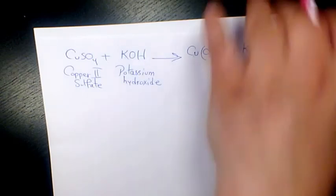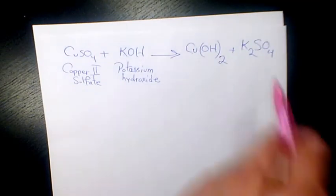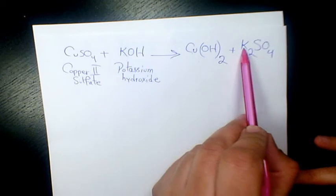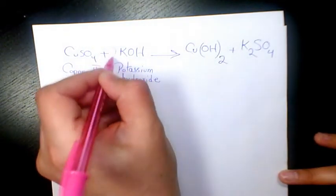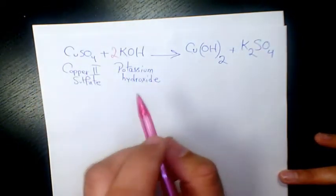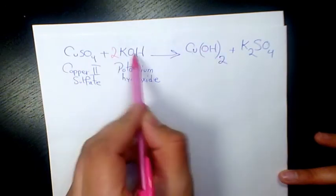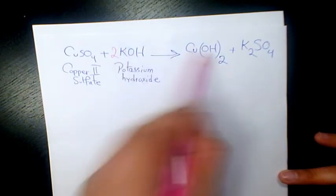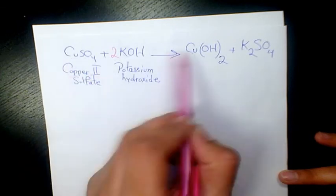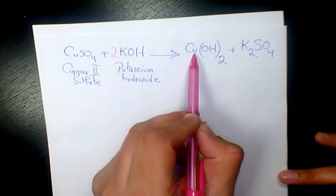Now it's time to balance them. Potassium in the product side is 2, we have two atoms here, we need to have two atoms of potassium on the reactant side as well. Hydroxide, we have two here, we have two as well, so this one is balanced. Now copper is one on the reactant side and is one on the product side.